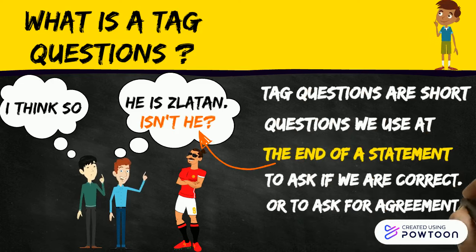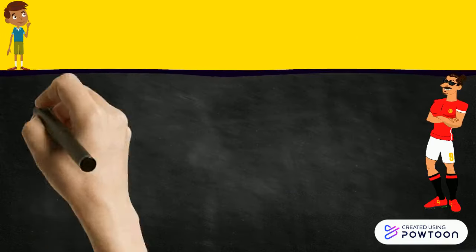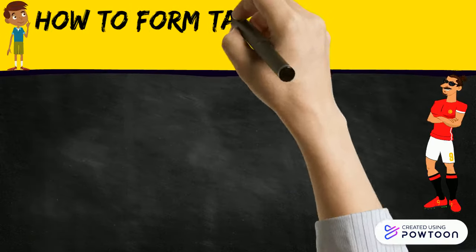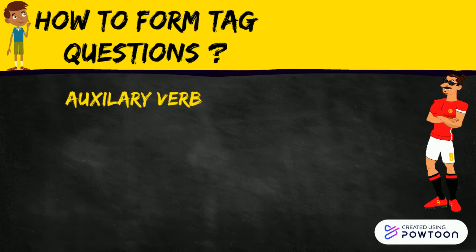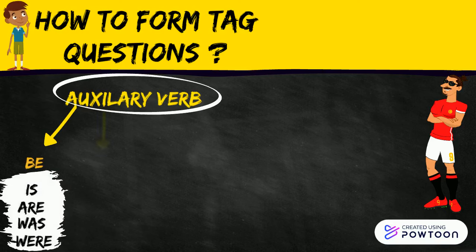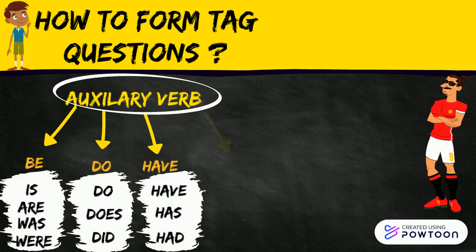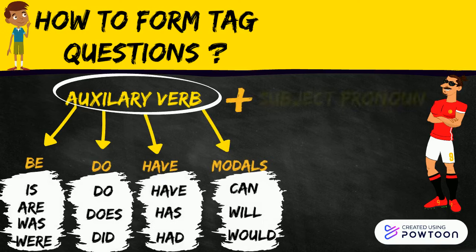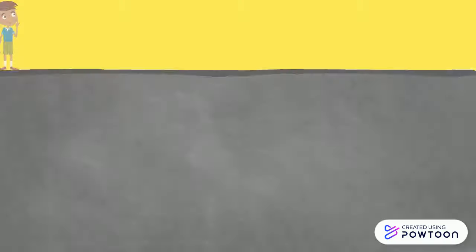And how do we form tag questions? To make a tag question, we use an auxiliary verb like the auxiliary 'to be', 'to do', 'to have', or sometimes modal auxiliaries, plus a subject pronoun. Let's see some examples.